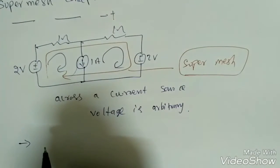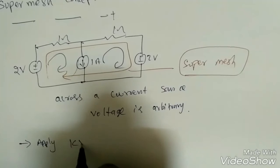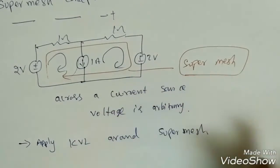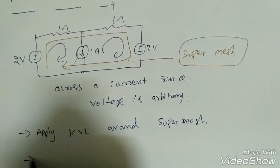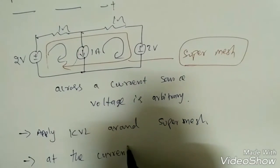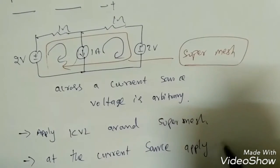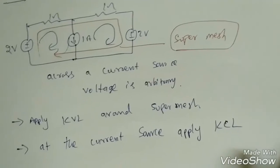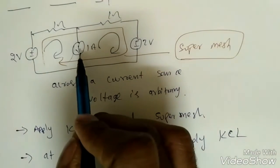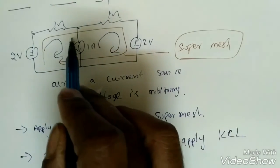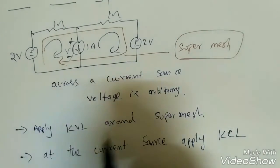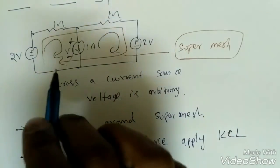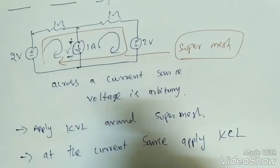When a current source exists in a mesh, we cannot apply mesh analysis around that loop or the adjacent loop. Instead, we apply the super mesh concept: combine the two meshes into a single super mesh. The procedure is: apply KVL around the super mesh to get one equation, then apply KCL at the current source to get the second equation.